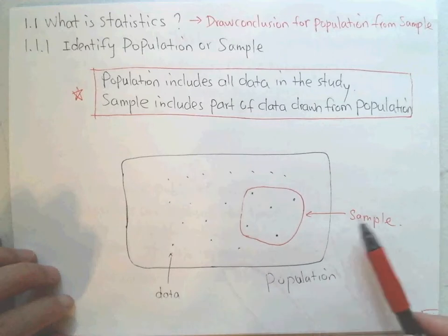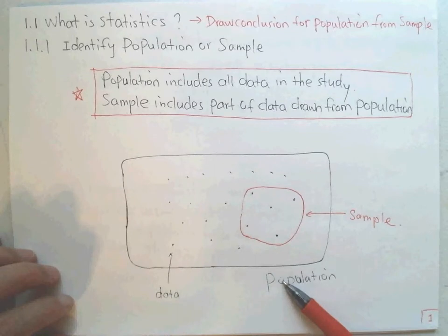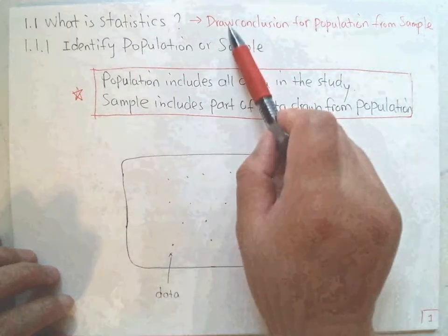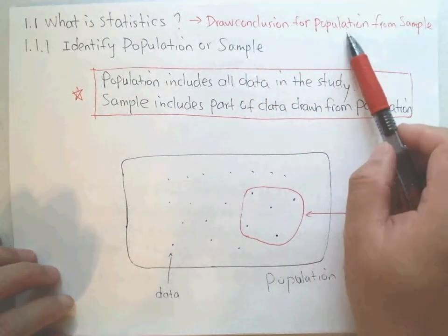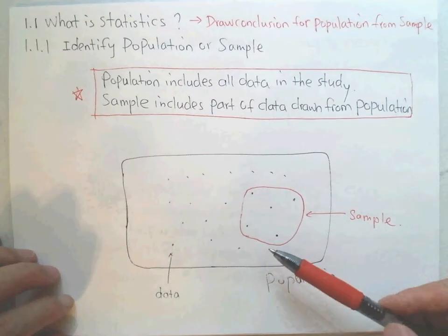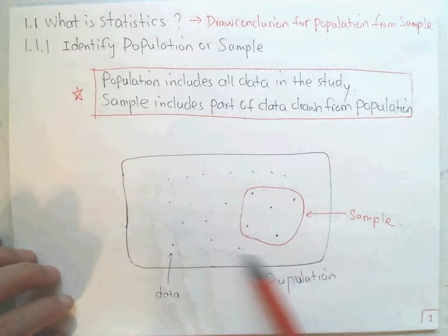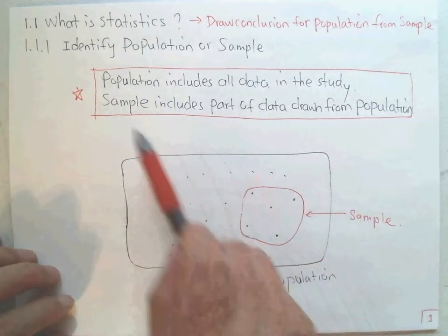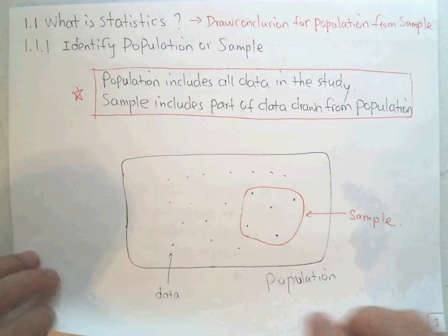This is what we call statistics: use a small part of the data to draw conclusions for all the salaries in the United States for men. From the sample, we estimate the population. So we draw conclusions for the population from the sample. Population is all; sample is a part.